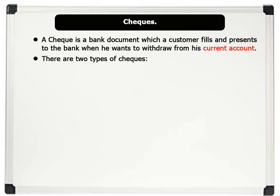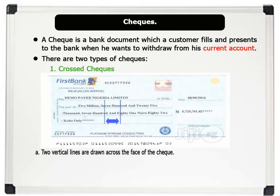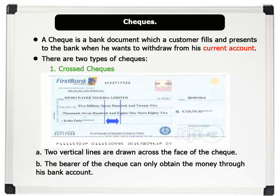There are two types of checks. 1. Cross Checks. The image on the board shows a sample of a cross check. Notice how the check is filled out: the date, the name of the bearer, and the amount of money to be paid to him in words and in figures. There are two features of a cross check: A. Two vertical lines are drawn across the face of the check. B. The bearer of a cross check can only obtain the money through his bank account. Note: a cross check can be opened by signing across the two vertical lines.